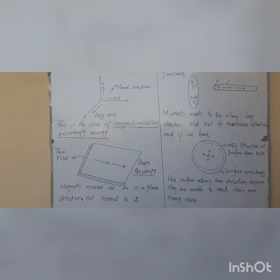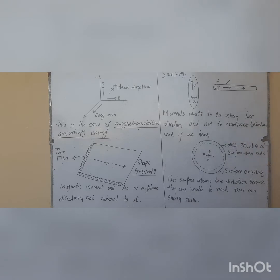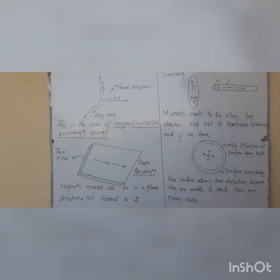In the case of a spherical particle, the situation is different. Some atoms are in the interior of the system and a few are on the surface. These surface atoms have distortion because they are unable to reach their minimum energy state, whereas interior atoms are in their equilibrium state. So in this case, surface anisotropy is present. These are the different kinds of anisotropy which can exist in the system.